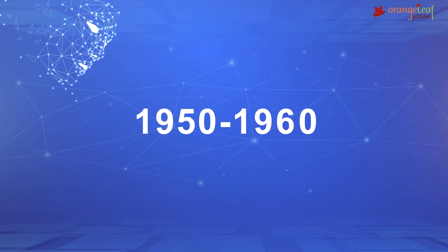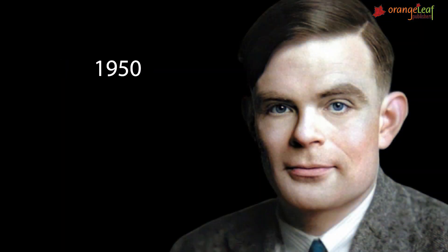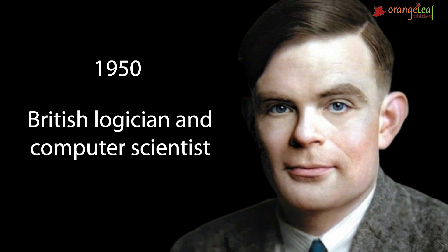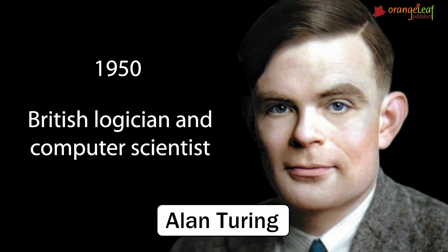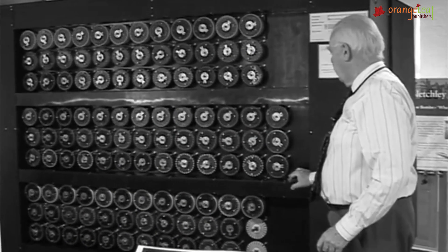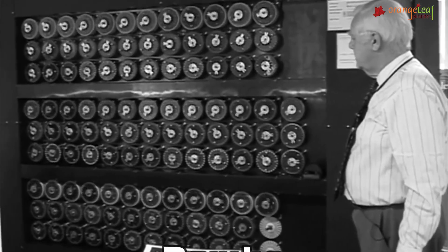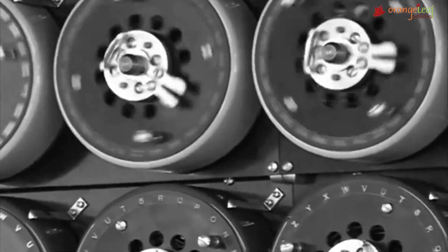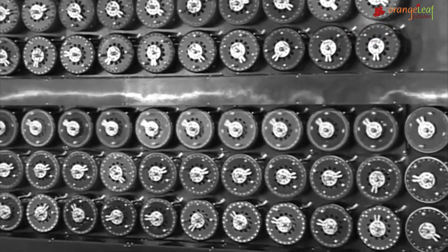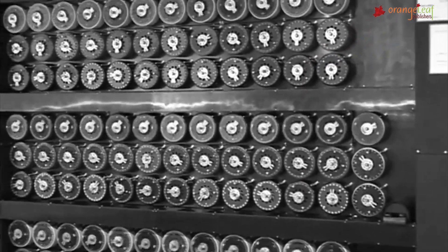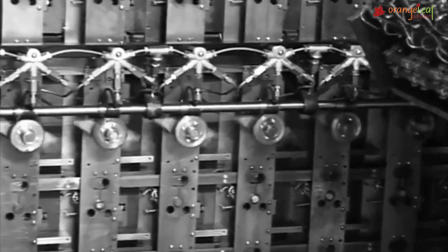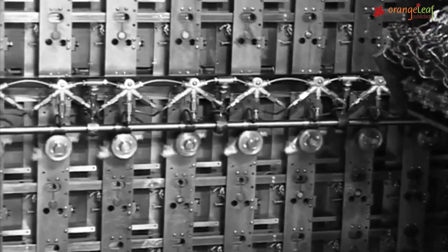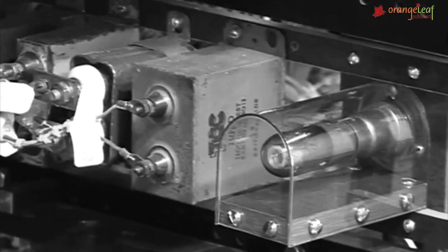1950 to 1960. In 1950, the British logician and computer scientist Alan Turing introduced the Turing test for evaluation of intelligence and published Computing Machinery and Intelligence. One of the greatest achievements of Alan Turing is the creation of the bomb machine that could decode encoded messages.